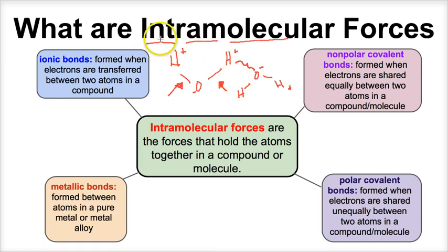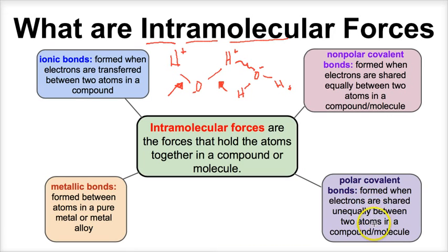In this video we're going to talk about intramolecular forces. We're going to talk about ionic bonds, which are bonds formed when electrons are transferred between two atoms in a compound. We're also going to talk about nonpolar covalent bonds, which are bonds formed when electrons are shared equally between two atoms. And lastly, polar covalent bonds, which are bonds formed when electrons are shared unequally between two atoms. One final intramolecular force is metallic bonding, which are bonds formed between atoms in a pure metal or metal alloy.